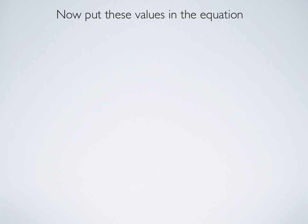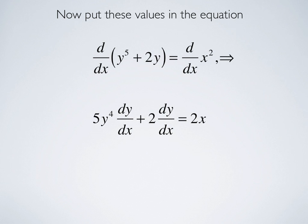Now, put these values back in the equation. We're equating both sides. So, we have d dx of y to the fifth plus 2y equals d dx of x squared. So, using our results we obtained on the previous slide, 5y to the fourth times dy dx plus 2 dy dx equals 2x.